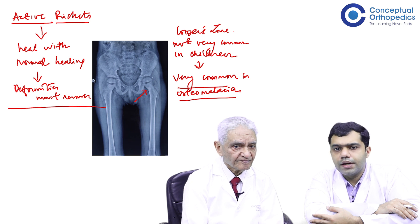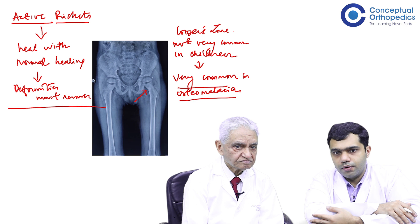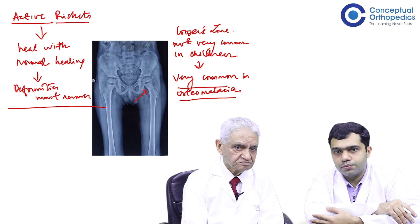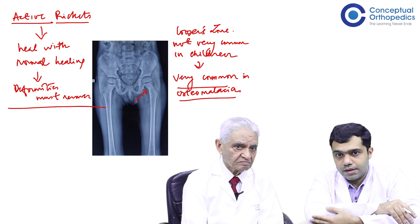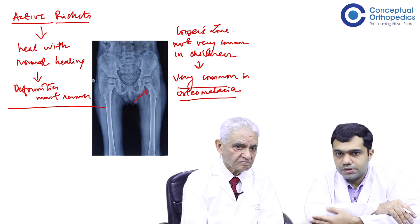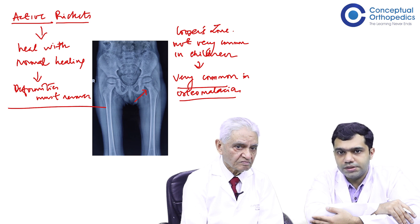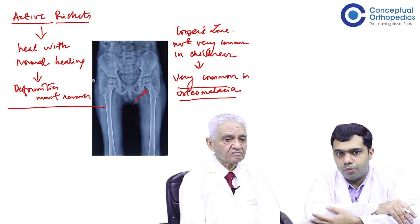Considering the last two years with pretty much lockdowns and schools being shut down, children are mostly confined to their homes with more online teaching, and indoor games have taken a large part in their lives. Sunray exposure is quite low. So these kind of findings, complaints, and x-ray images are going to be quite commonly presented to your OPD and you should be able to identify them. Whenever you think about a deformity of the knee, always get a pelvis AP x-ray as well, which gives a lot of information.